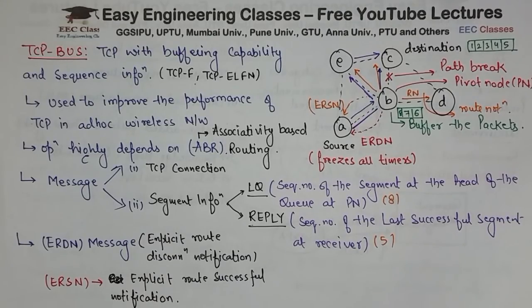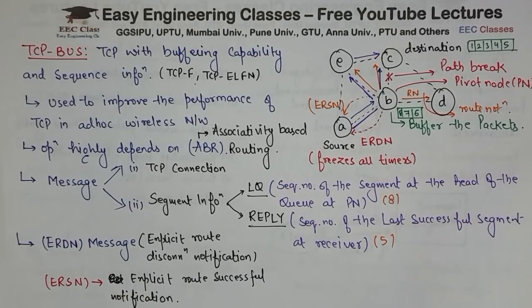Dekho, ERDN aur ERSN toh jo pichle mein humne padha hai — TCP-AF, TCP-ELFN uski tarah hai. But jo difference aaya, woh aaya LQ aur Reply ke andar. So this is TCP BUS. Iske advantages toh simple hain — performance increase kar rahi hai. Then we are avoiding the transmission of the already sent packets.